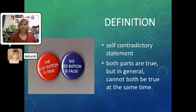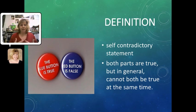To look first at our definition: a paradox is a self-contradictory statement. When you say it out loud, it sounds like both parts are true, but they can't be true at the same time. If you look at the picture here — if the red button says the blue button is true, but the blue button says the red button is false — how can both of those things be true at the same time? That's an example of a paradox.